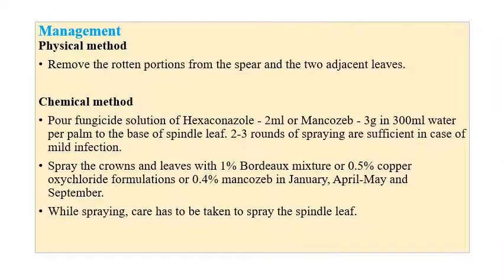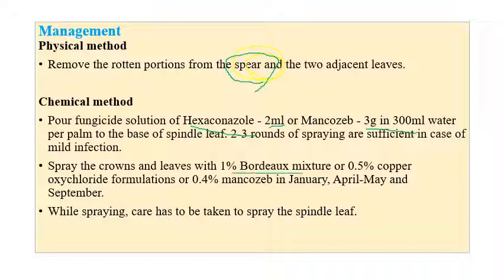Management of Leaf Rot includes removing rotten portions, especially in the spear region; if the spear is infected, the two adjacent leaves should also be removed. Chemically, a fungicide solution of Hexaconazole 2 ml or Mancozeb 3 g in 300 ml of water per palm can be recommended. Spraying Bordeaux mixture or 0.5 percent copper oxychloride or 0.4 percent Mancozeb in January, April-May, and September — thrice a year — is recommended, ensuring the spindle leaves are thoroughly sprayed.